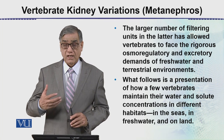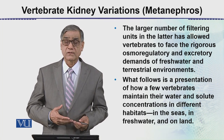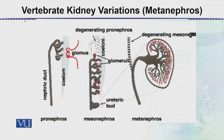This is the pronephros — this part here is the pronephros. This is the pronephros duct, and these are the coelom cells, and this is the glomerulus, which is a very early form of the kidney. So this is a part of the kidney.